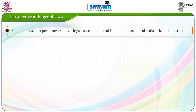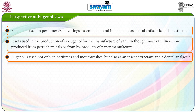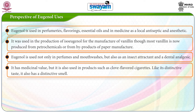Perspectives of food uses of eugenol: eugenol is used in perfumeries, flavourings, essential oils, and in medicine as a local antiseptic and anaesthetic. It was used in the production of isoeugenol for the manufacture of vanillin, though most vanillin is now produced from petrochemicals or from by-products of paper manufacture. Eugenol is used not only in perfumes and mouthwashes but also as an insect attractant and a dental analgesic. It has medicinal value and is also used in products such as clove-flavoured cigarettes.